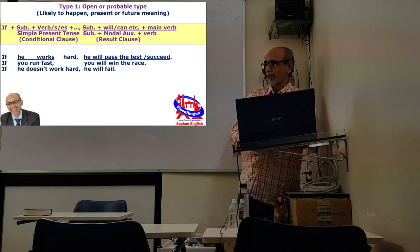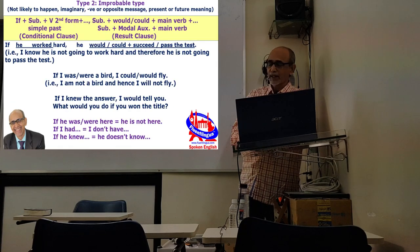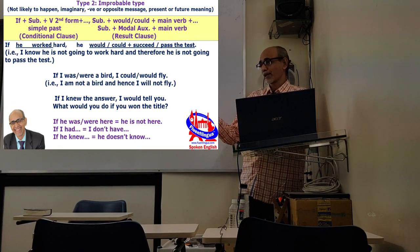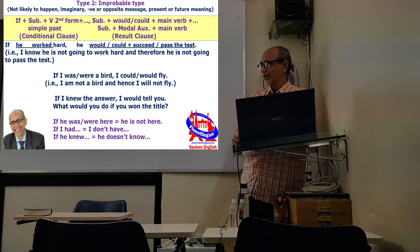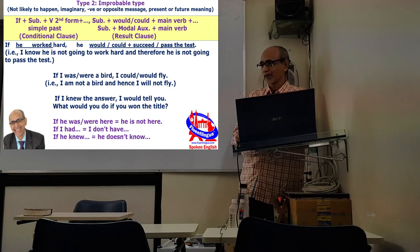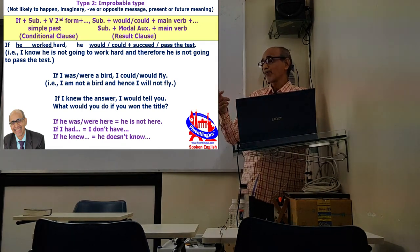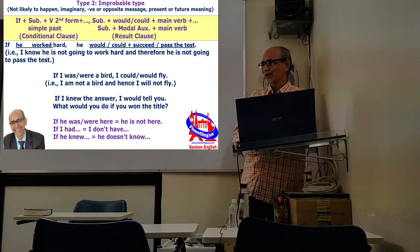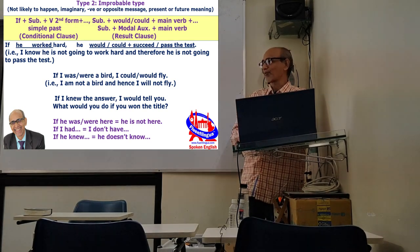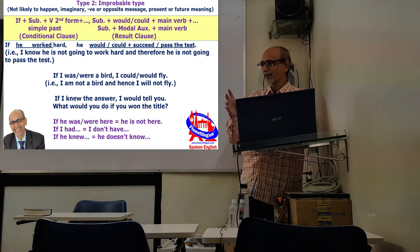Now, we go to the second type. The second type is again for present or future time, but it is not likely to happen. It is improbable type. To convey that improbability, we use the past tense forms. The forms are past but the meaning is not past, and that is why it is a little difficult to understand.